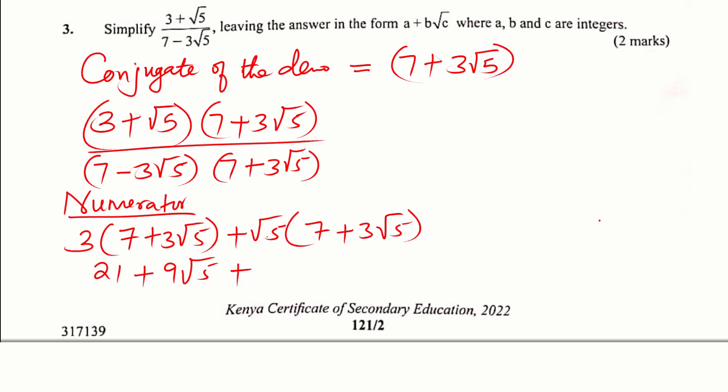Plus root 5 times 7, you get 7 root 5. And then plus root 5 times 3 root 5 would give 3 times 5, which would give 15. So the whole of this simplifies to 21 plus 15, that is 36, plus 9 root 5 plus 7 root 5, you get 16 root 5.